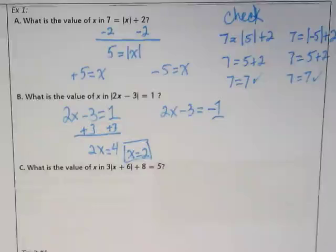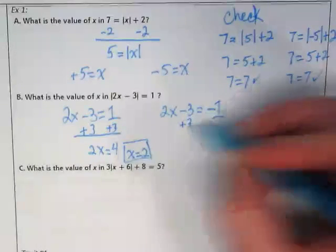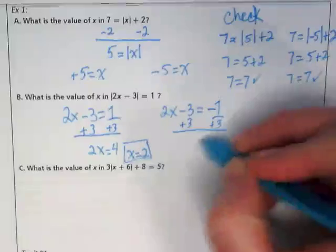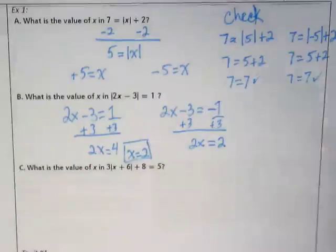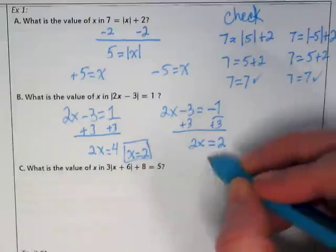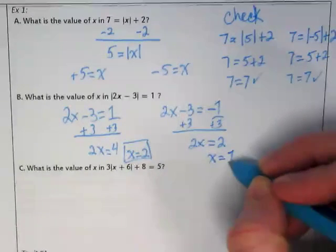And now we're going to do the same thing to the negative version. So again, plus 3, I get 2x is equal to 2. And if I divide both of those by 2, I'm going to get x is equal to 1.